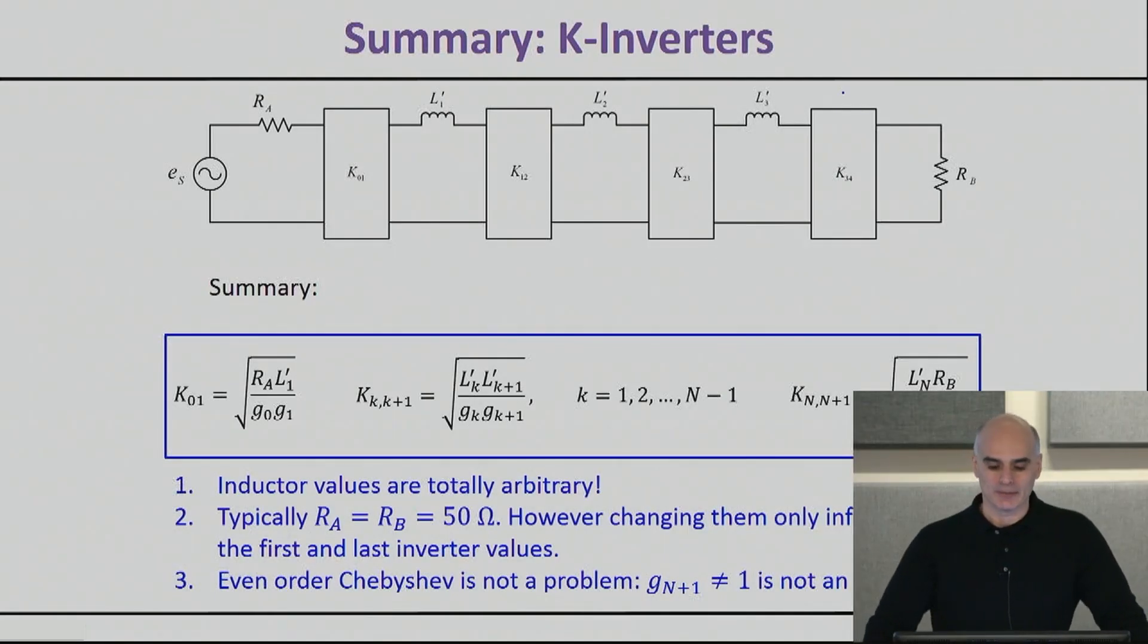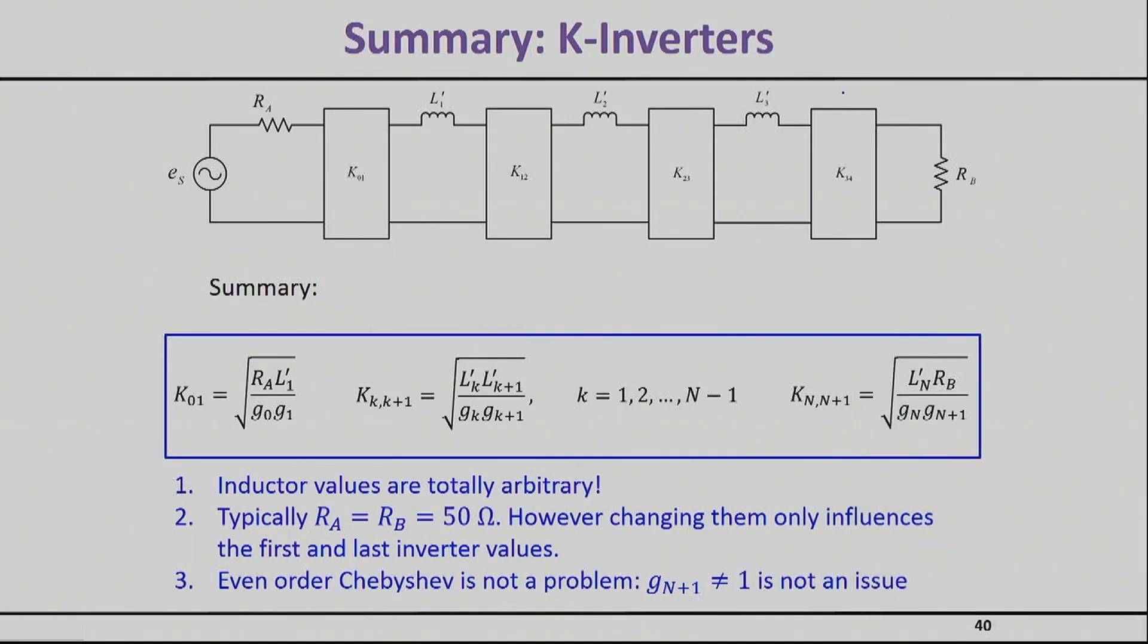This is the summary for what we just discussed. This shows you how you can calculate the inverter sections or coupling sections of the filters if you know the impedances for the source, written here as RA, and the impedance of the load, given as RB.